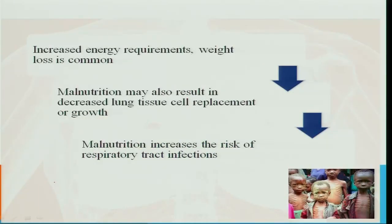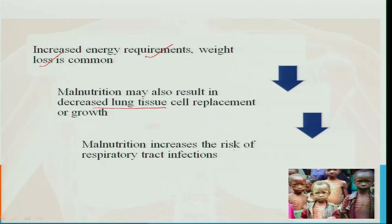At the same time, when the individual has shortness of breath, energy requirements actually increase. There is more energy output compared to energy intake, so weight loss is very common. Malnutrition may also result in decreased lung tissue cell replacement and growth, as worn-out tissues need to be repaired. Malnutrition further increases the risk of respiratory tract infections, creating a vicious cycle: decreased food intake leads to insufficient lung tissue repair, which worsens malnutrition.